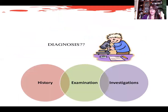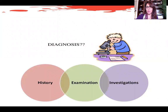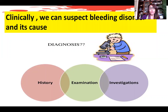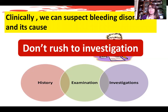Now we can provisionally assess the cause of a bleeding disorder. Any assessment must start with history taking, followed by thorough examination, and then investigation. Please suspect the diagnosis by following these steps — don't rush to investigation.